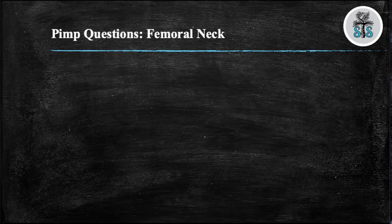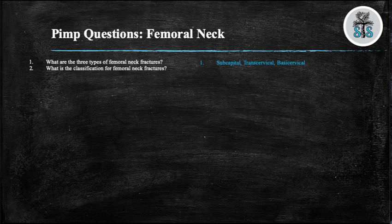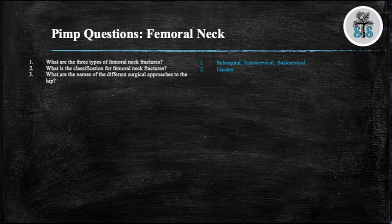Now we'll go over some sample pimp questions you might be asked while on rotations. Question 1: What are the three types of femoral neck fractures? Subcapital, transcervical, and basocervical. Question 2: What is the main classification of femoral neck fractures? Garden. Question 3: What are the names of the different surgical approaches to the hip? Anterior, also known as the Smith-Peterson approach; anterolateral, also known as the Watson-Jones; the lateral, also known as the Hardinge; and the posterior, also known as the Moore or Southern approach.